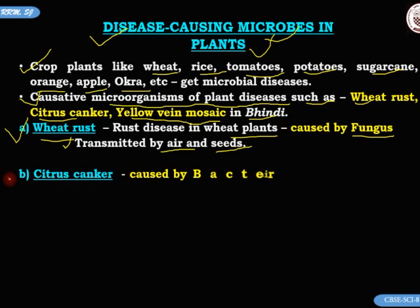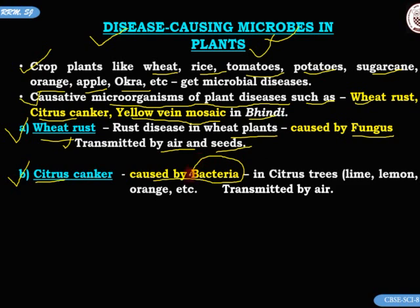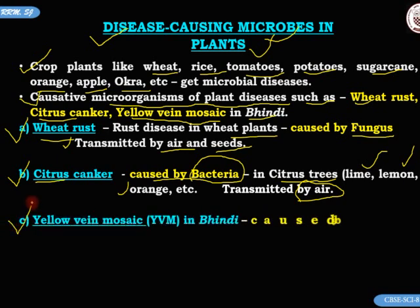The second disease is citrus canker. As the name suggests, this disease is caused in citrus plants such as lime, lemon, and orange, and it is caused by bacteria. This disease is transmitted by air.